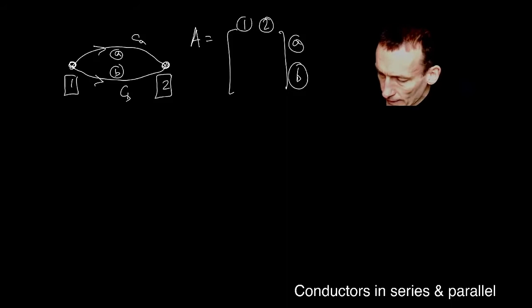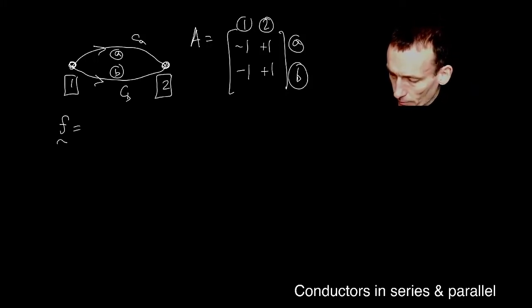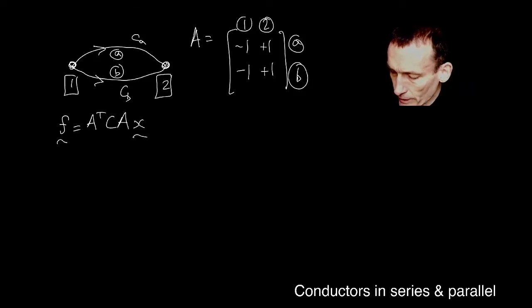Well, if that's the case, then it means that edge A is coming out of node one and into node two and edge B is coming out of node one and into node two. So that's my incidence matrix. Now, you recall in the last lecture, I decided that the net current out of each node is given by A transpose C A times the vector of potentials, the voltages of the nodes.